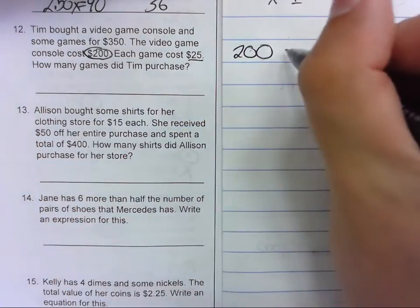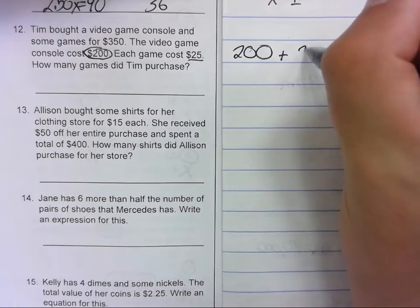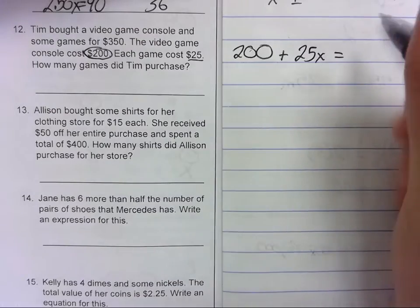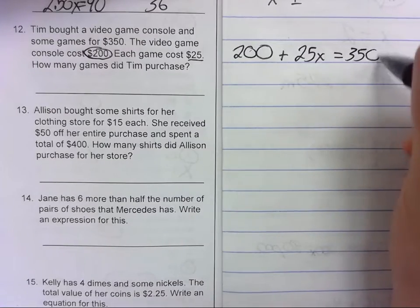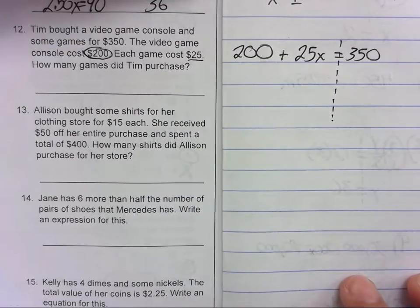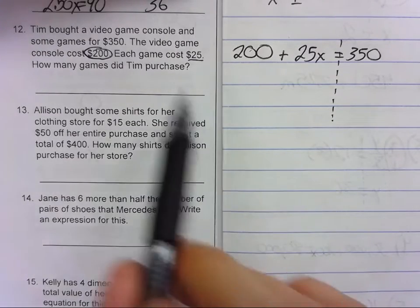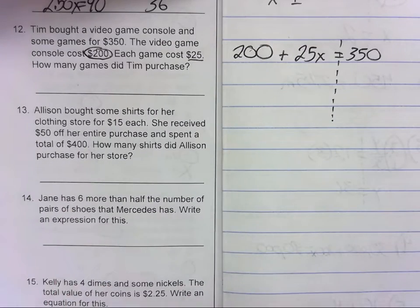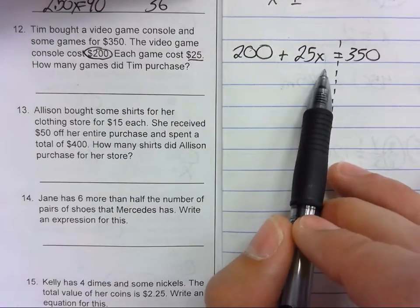Then he's going to buy some games that cost $25 each. The total is 350 dollars. So how many games did he purchase? We don't need to write the equation here because it doesn't say write and solve. We're just going to write it on our scrap paper and solve it there.